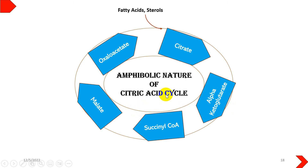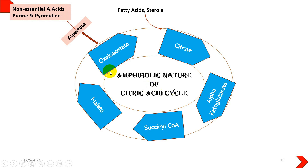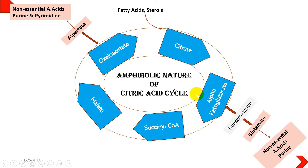The citric acid cycle has an amphibolic nature — it is not a closed cycle but has both synthetic and degradative roles, serving as both an anabolic and catabolic pathway. For example, oxaloacetate can be converted into aspartate via transamination, and alpha-ketoglutarate can be converted into glutamate via transamination. Alpha-ketoglutarate is also utilized in the alanine cycle and the urea cycle.